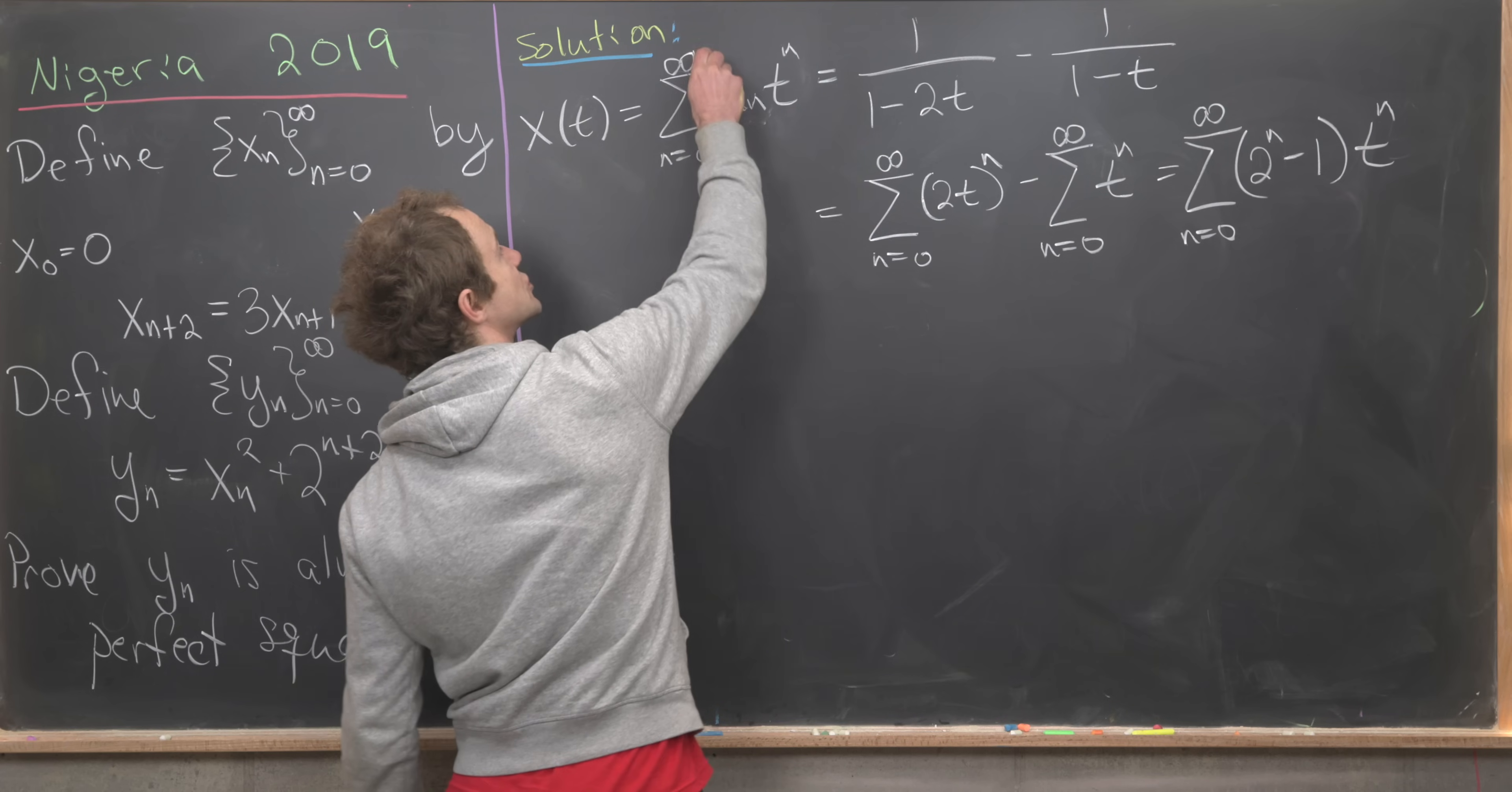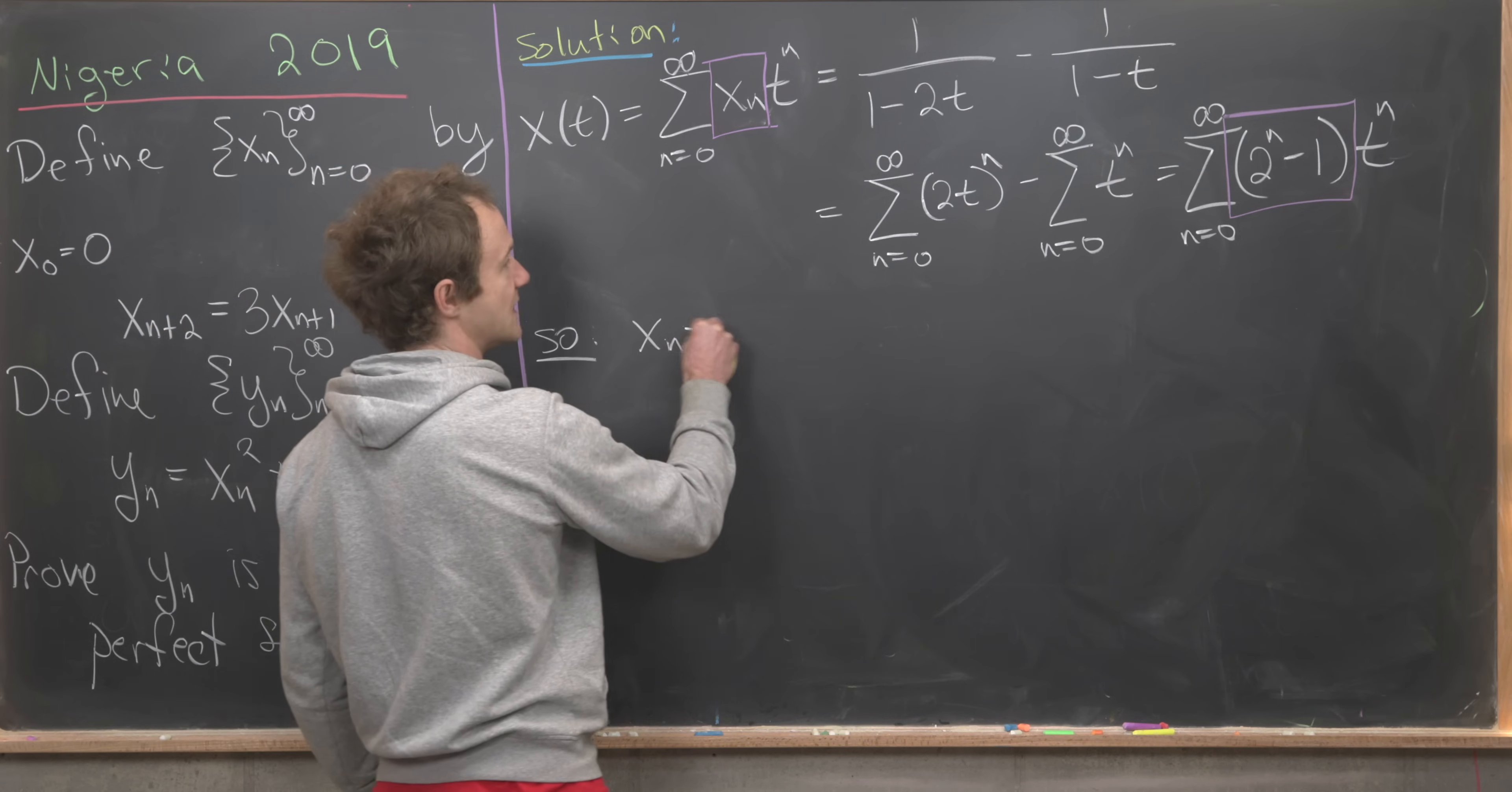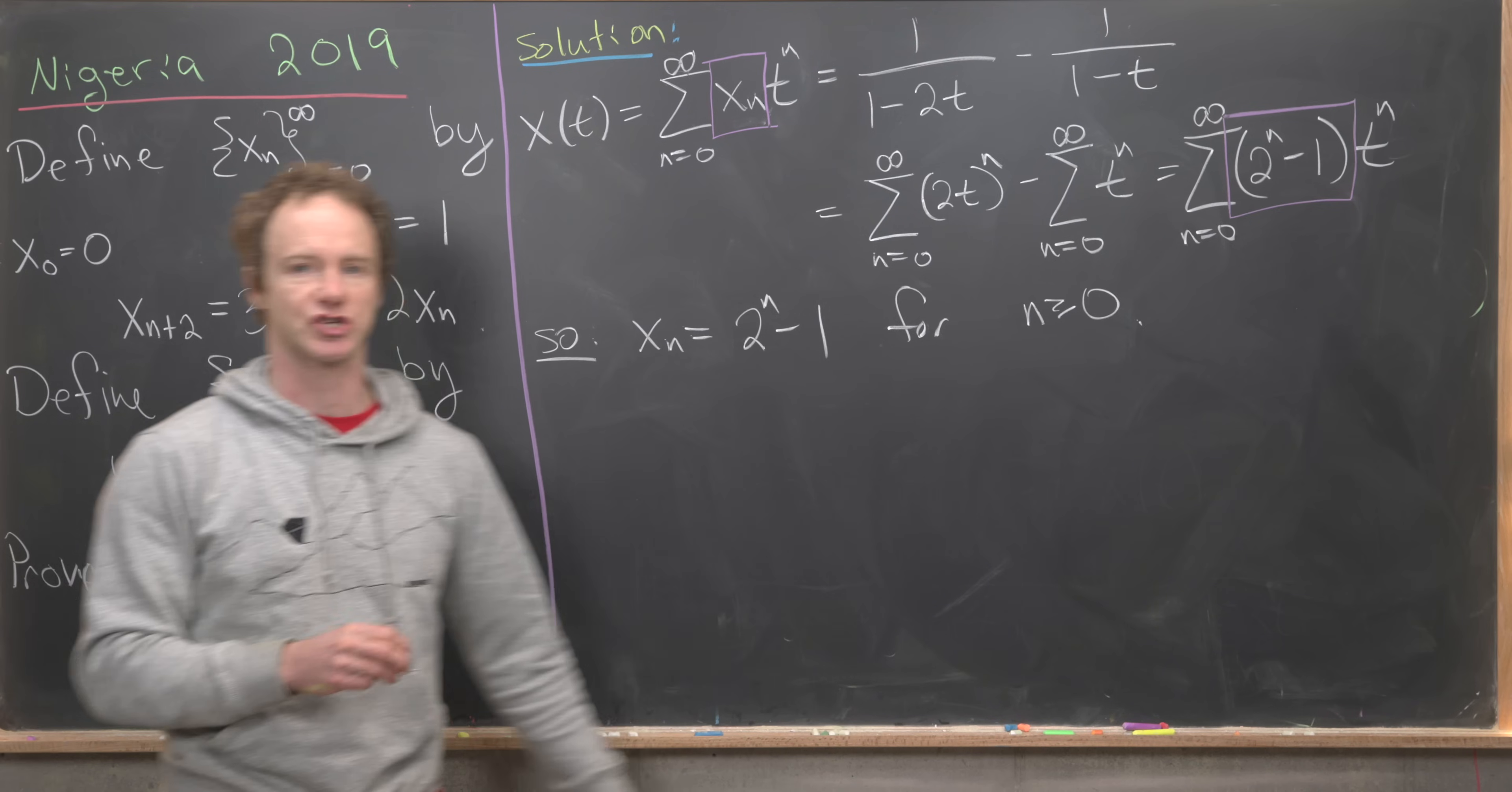Now comparing this coefficient right here which is the value of our sequence with this coefficient we see that we've found a closed form for our sequence x sub n. Let's summarize that: x sub n equals 2 to the n minus 1, and this is going to be true for all n greater than or equal to 0. Just checking the first couple of cases you see that we are in line with what we get with this recursion.